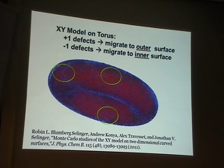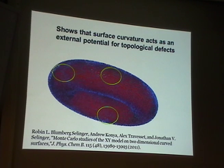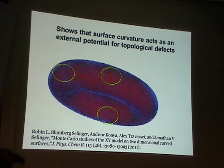What can we learn from this simple simulation? Curvature acts as an external potential for topological defects — positive defects tend to migrate to regions of positive curvature, and negative defects migrate to regions of negative curvature. This emerges just from the XY Hamiltonian without adding any extra terms.